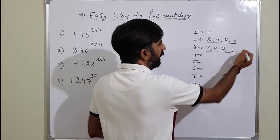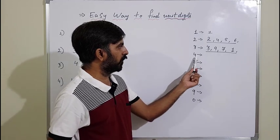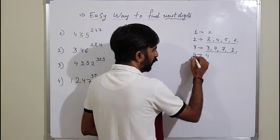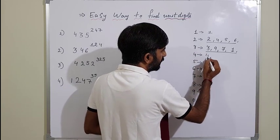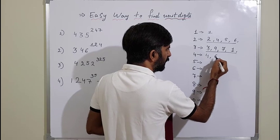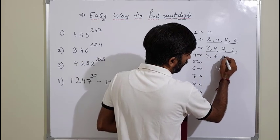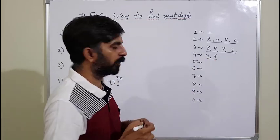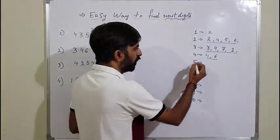For 4: 4 raised to 1 gives unit digit 4, and 4 squared gives 16 so unit digit is 6. Then 4 cubed gives unit digit 4 again. So only 2 possibilities — 4 and 6 — repeat alternately for any power of 4.